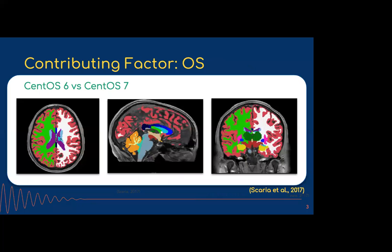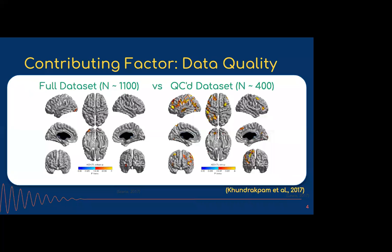Here's an example done by Tristan and a student of his, where all they did was switch between two versions of the CentOS operating system and run the HCP pipeline on the same subject — same dataset, same tool, same parameters, same hardware, only changing CentOS 6 and 7. The flicker is the difference between the segmentations you get, which is scary when you care about cortical thickness. You get a significantly different answer depending on just what version of CentOS you pick.